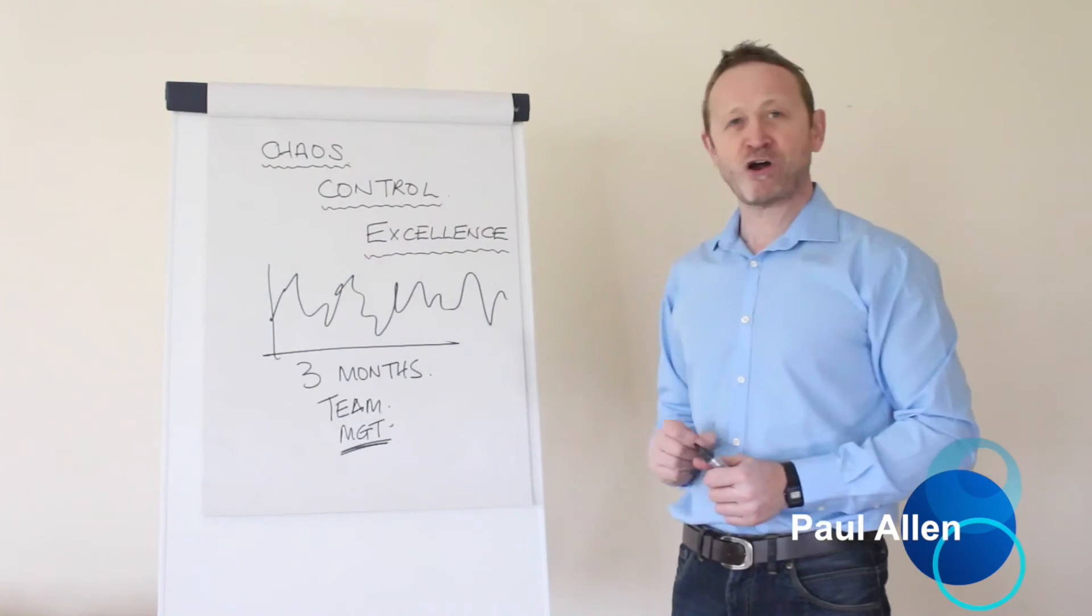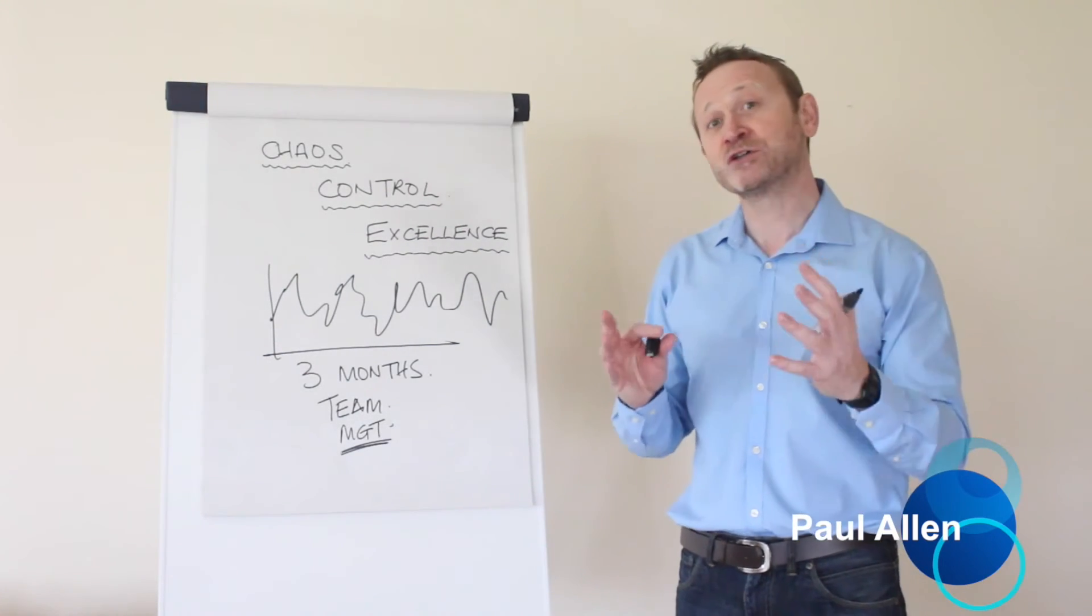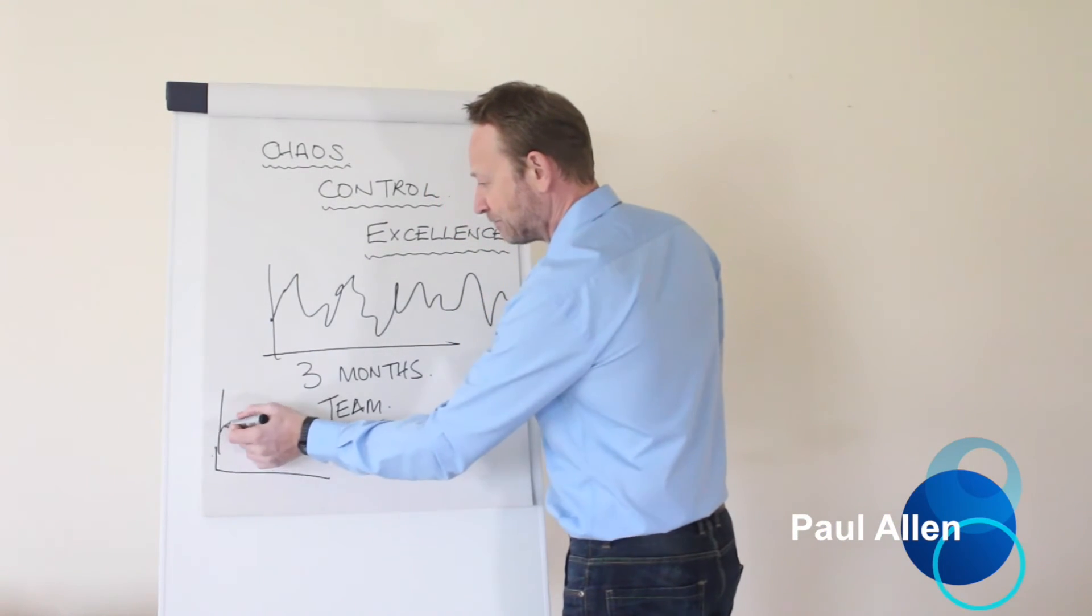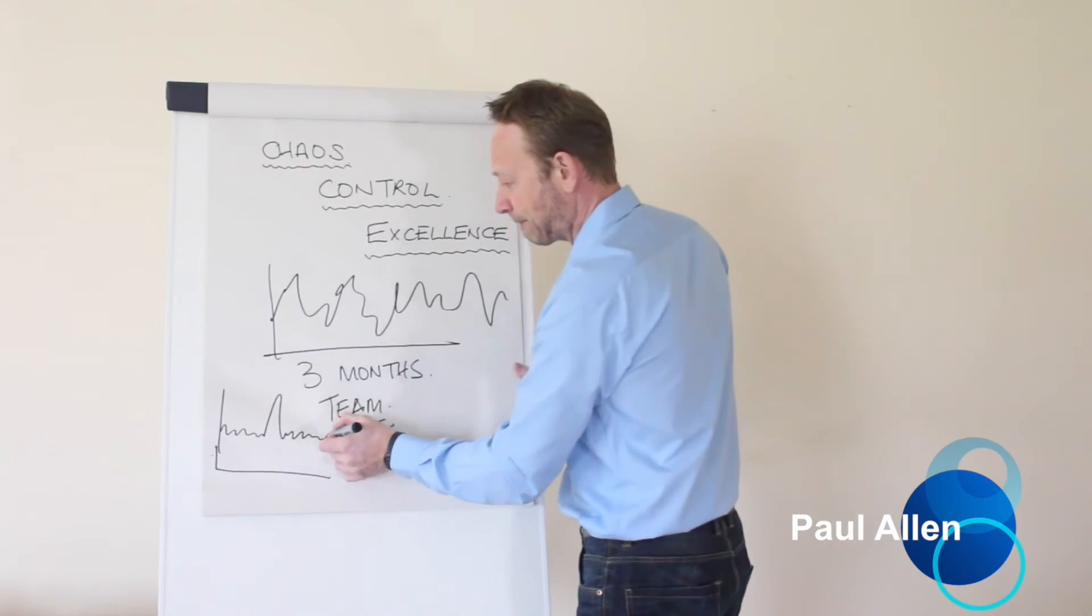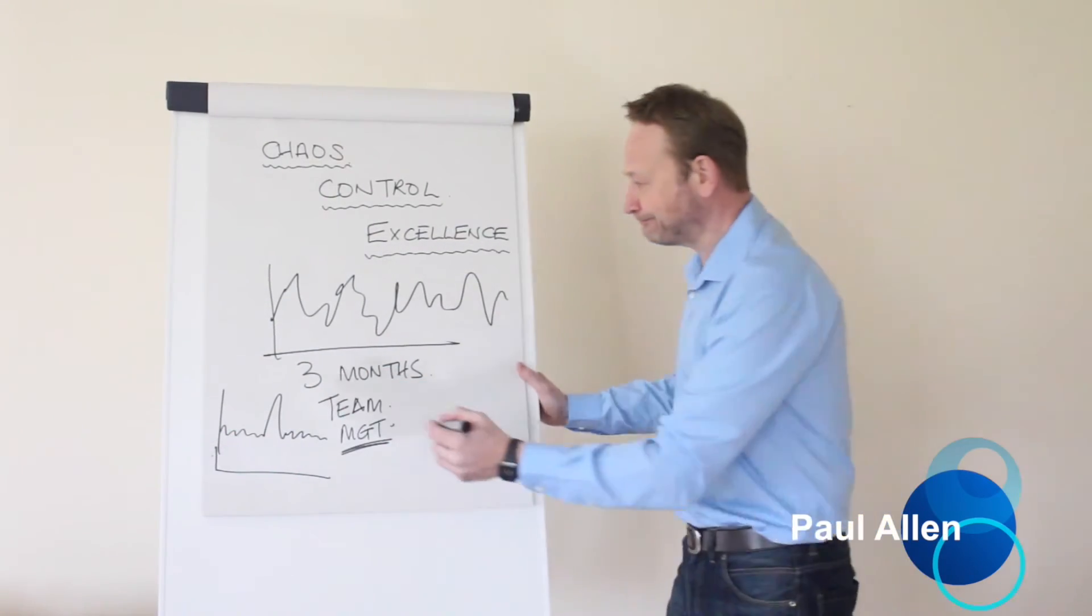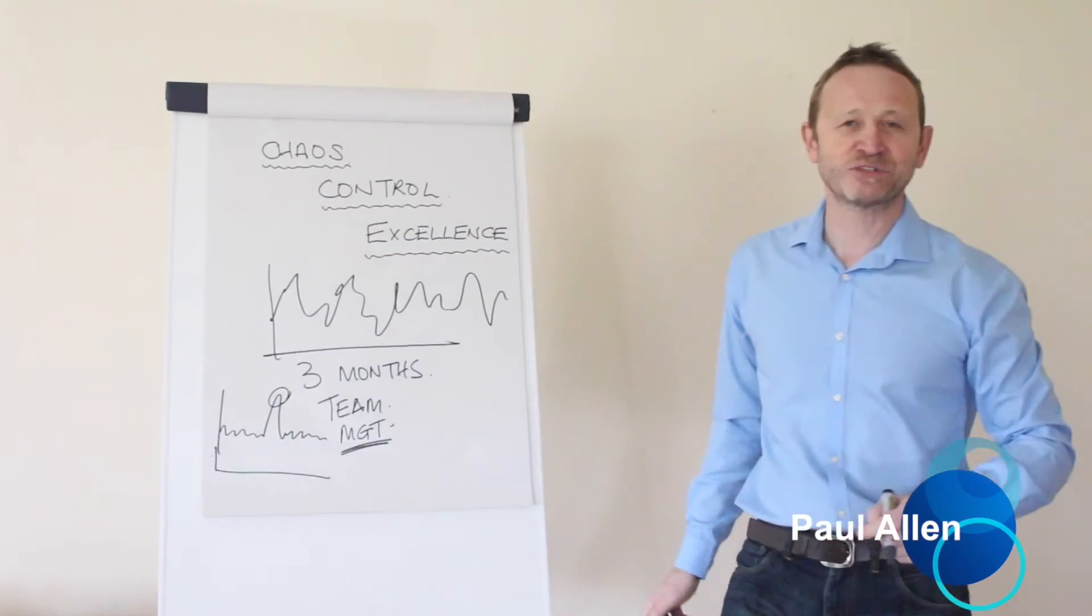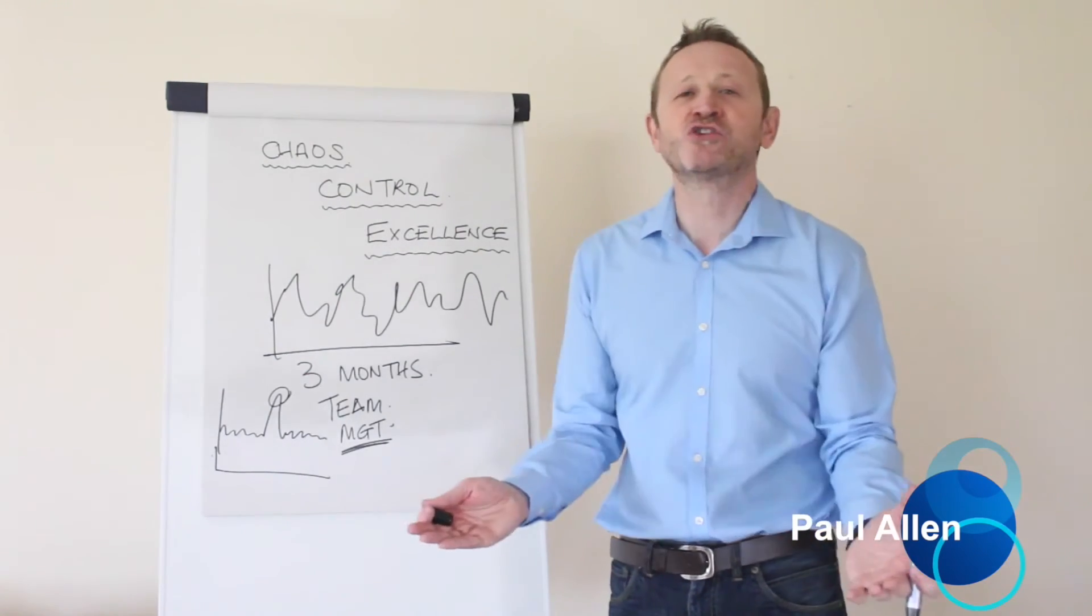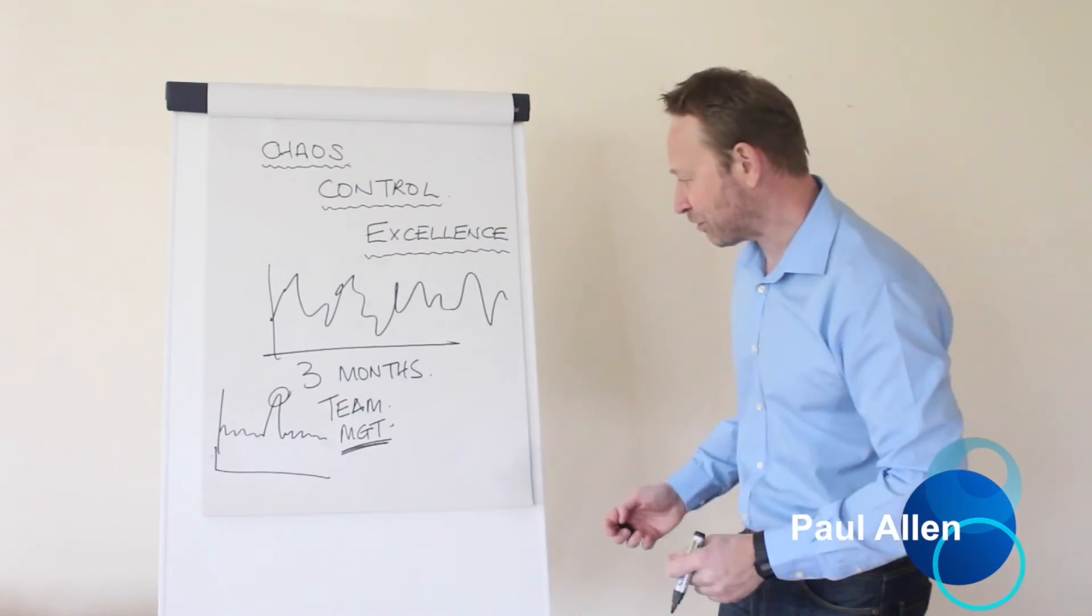If you're in control, however, your problem will look different on the chart. Your problem will look like this. The process is perfectly in control and then something special happens, something unique, something has gone wrong. One thing has gone wrong, typically.